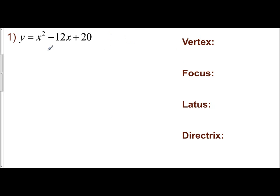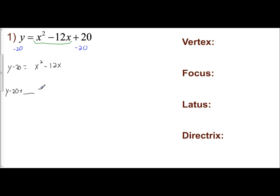Let's start with example 1. When you are completing the square, you want to focus on your quadratic and linear terms. An easy way of doing that is to isolate them by moving your constant to the other side. So I'm going to subtract 20 from both sides, leaving me with y minus 20 equals x squared minus 12x. I have a leading coefficient of 1, so I can complete the square. I'll insert placeholders to keep the equation balanced.